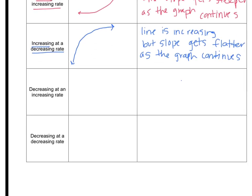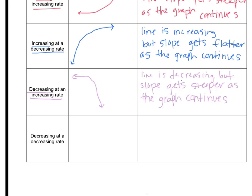Now we look at decreasing, and there are two types of decreasing just like there were two types of increasing. You can decrease at an increasing rate, and you can decrease at a decreasing rate. For decreasing at an increasing rate: the line is decreasing and the slope is increasing. To decrease, instead of starting at the bottom, you start at the top. The slope starts off slow and then gets really sharp — so first the slope is flat or zero, then all of a sudden the slope gets really steep, and the line is decreasing but the slope gets steeper as the graph continues.